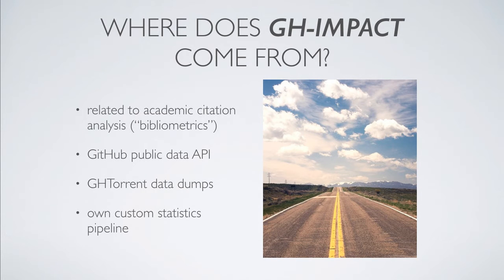GH Impact is inspired by a field of academic research known as bibliometrics, which looks at articles and citations of those articles to figure out things like how influential an author is. This specific work makes extensive use of data that GitHub releases publicly. The fine folks at GH Torrent are constantly scraping the public API and collecting that information into big data dumps that were used for this work, and then our own processing pipeline was used to actually calculate GH Impact.